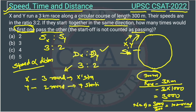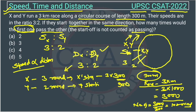When X completes 3 rounds, X will be at the starting point, and Y will also be there after completing 2 rounds — so they meet at the starting point. 3 rounds means 3 × 300 = 900 meters for X, and Y covers 2 × 300 = 600 meters.